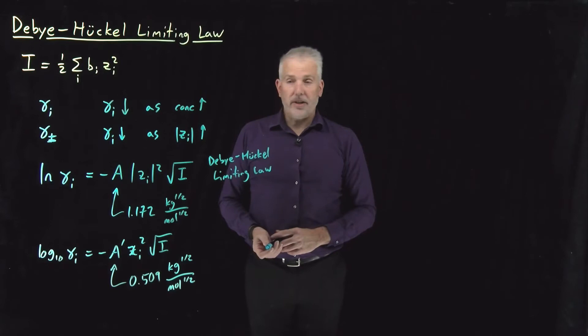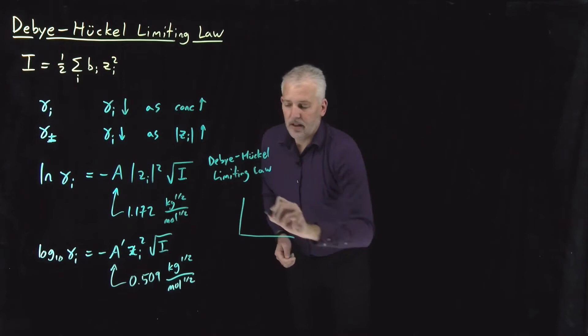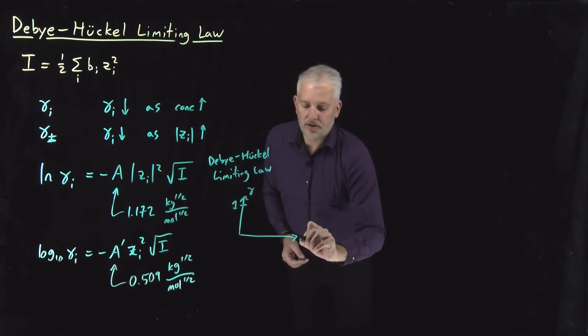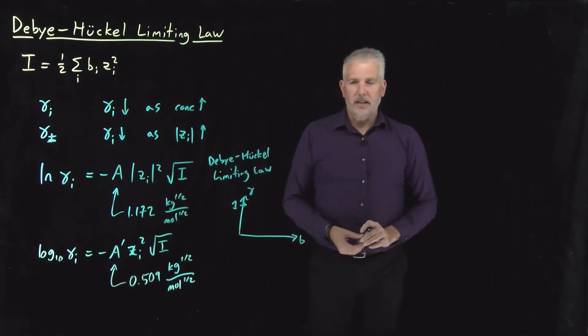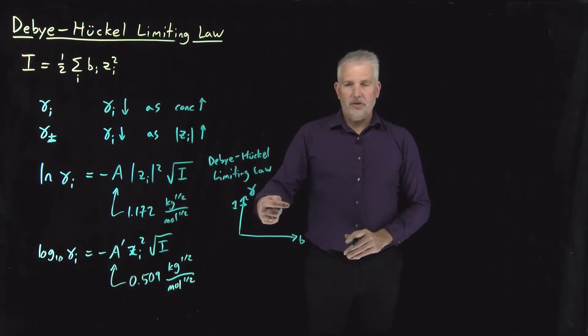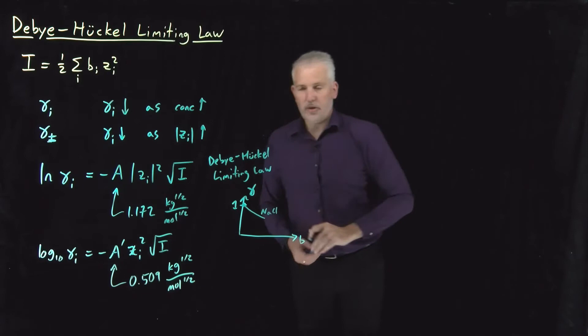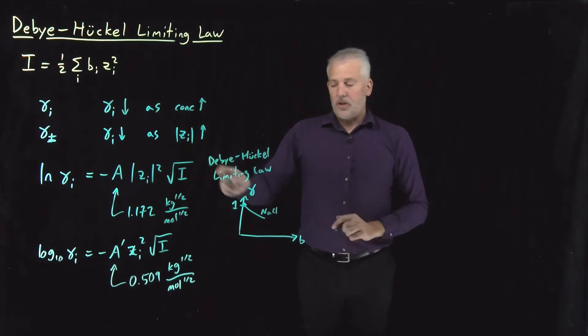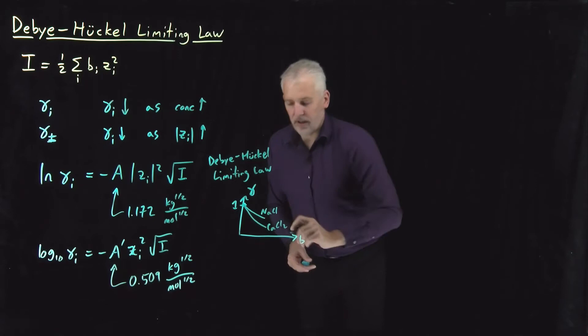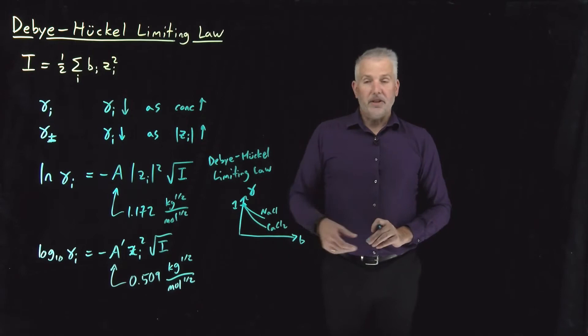We can think of where this constant comes from perhaps in a couple different ways. We could think of it as being derived empirically. Imagine that I did some experiments and calculated how the activity coefficient depended on concentration, let's say molality. For a dilute solution, it's going to behave ideally, and the activity coefficient is going to be 1. The more concentrated the solution gets, the less ideal the solution is going to become. For maybe a sodium chloride solution, it decreases like this. For a calcium chloride solution, because the charge of the calcium is larger, it's going to decrease a little bit faster.